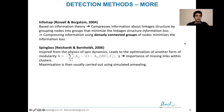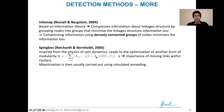Another method is the spin glass algorithm, inspired by the physics of spin dynamics. It leads to the optimization of another form of modularity H. This modularity includes a free parameter gamma that multiplies the penalization of the absence of links within clusters — higher gamma penalizes more clusters that lack internal links. The maximization of this modularity H is usually carried out using simulated annealing.